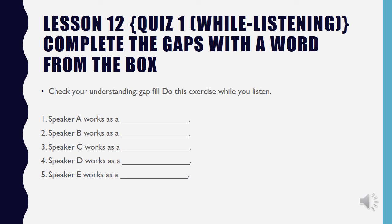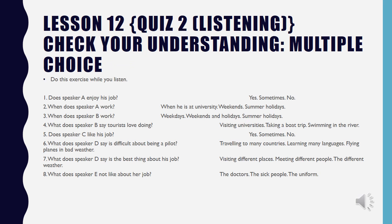There is an activity called complete the gaps with a word from the box. There are five blanks in which you have to put the right answer while listening to the recording. There is also another while-listening activity where you have to answer multiple choice questions. There are eight questions with some choices, and you have to identify the correct option by listening to the recording.